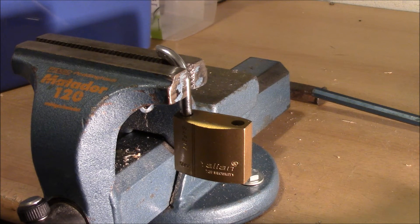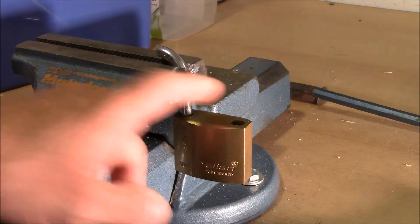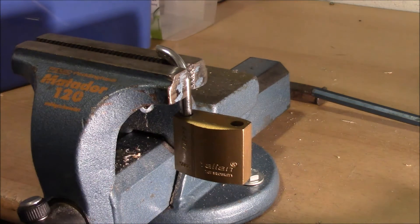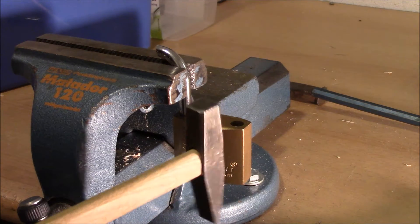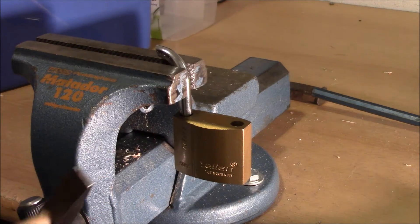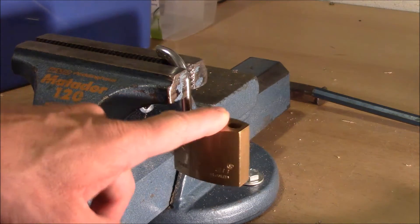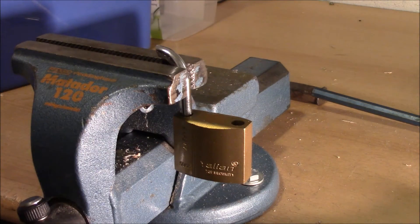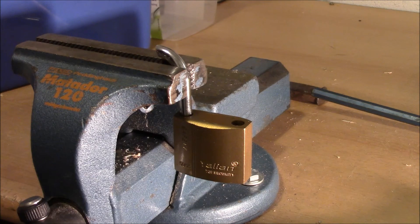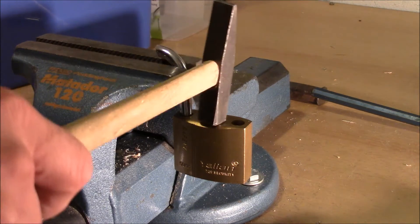Alright, it's clamped up in the vise again. I want to free the second part of the shackle here. I have actually a very small hammer here. I will try to just beat the lock a little bit. Maybe it frees up the second part as well. Let's try it.